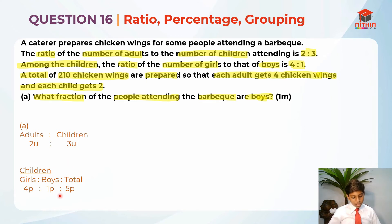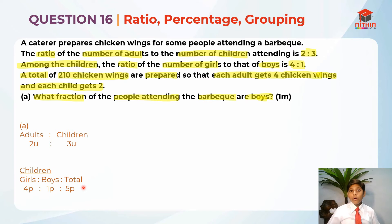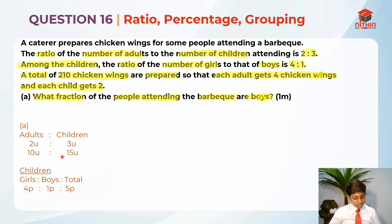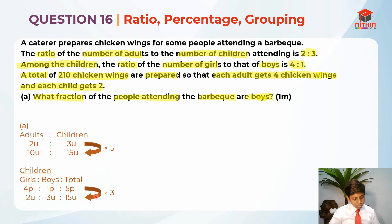But 5 and 3 are not the same, so we need to make them equal. The lowest common multiple of 5 and 3 is 15. So making it 10 units is to 15 units on the adults-children side, and 12 units is to 3 units is to 15 units on the girls-boys side. I times 5 on this side to make it 15 units and times 3 on this side to make it 15 units, and all of them are equal now. It's a stable working now.